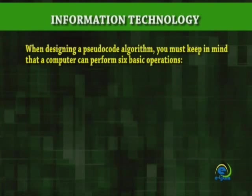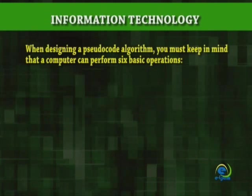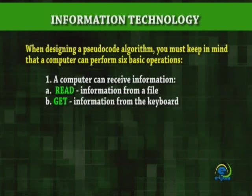When designing a pseudocode algorithm, you must keep in mind that a computer can perform six basic operations. Operation 1: A computer can receive information. A. Read information from a file. B. Get information from the keyboard.